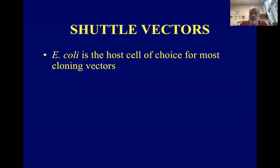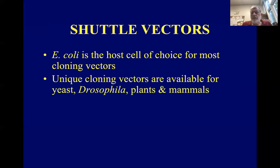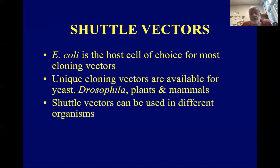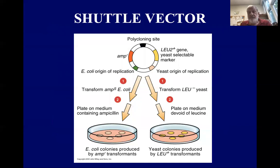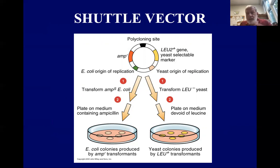Shuttle vectors can operate in more than one type of host cell. There are unique cloning vectors available for yeast, fruit flies, plants, and mammals, but the same shuttle vector can be used in, say, yeast and bacteria both, which makes it very convenient. This shows the vector with an ampicillin resistance gene as a selectable marker for E. coli, a leucine-2+ gene as a yeast selectable marker, an E. coli origin of replication, a yeast origin of replication, and the cloning site shown in black at the top.